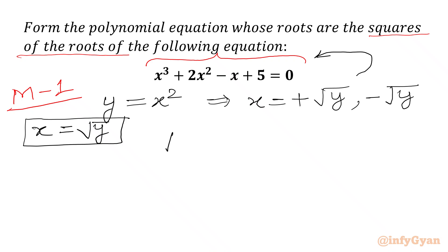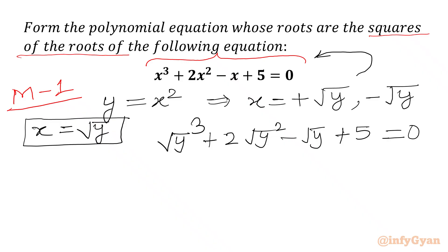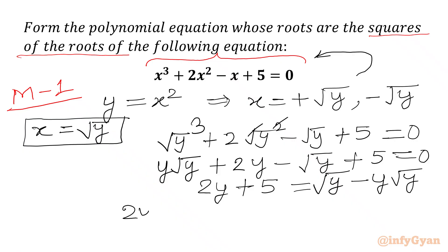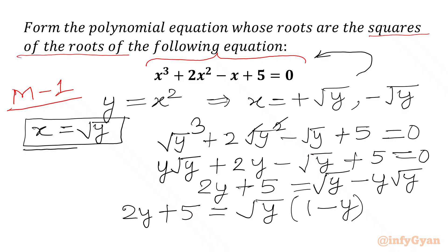We will put square root y in our equation: square root y whole cube plus 2 times square root y whole square minus square root y plus 5 equals 0. The square root and square cancel, giving us y times root y plus 2y minus root y plus 5 equals 0. We can write 2y plus 5 on the LHS, giving square root y times (1 minus y) on the RHS.